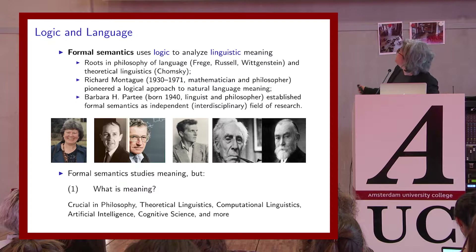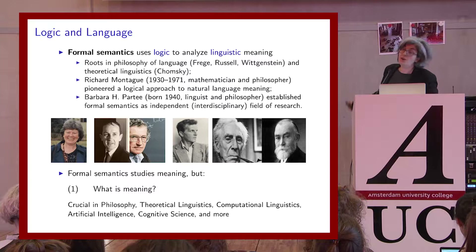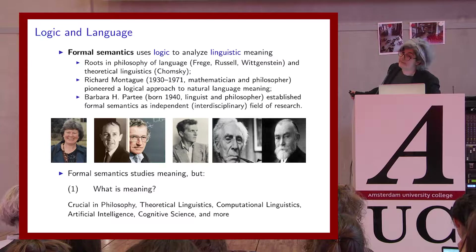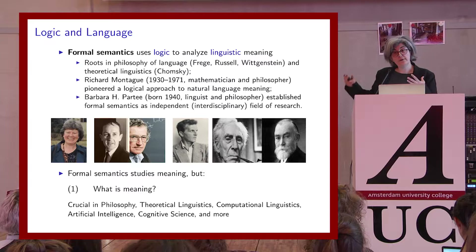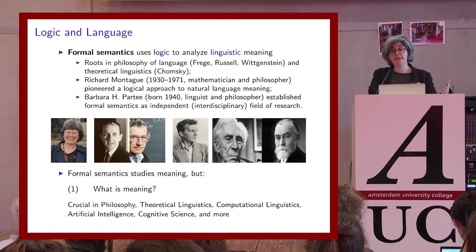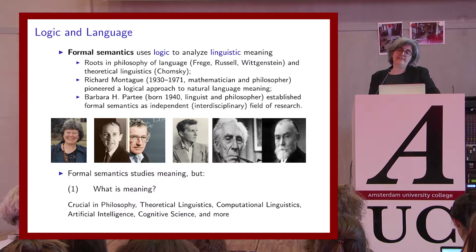There are two figures very important in the history of formal semantics. One is Richard Montague, who at the beginning of the 70s pioneered the use of logic to explain linguistic meanings. The second figure is Barbara Partee, who managed to put together these two traditions. She was a student of Chomsky at MIT, then went to UCLA and worked with Montague, bringing together theoretical linguistics, generative syntax, and logic and philosophy. She established formal semantics as an independent, flourishing, interdisciplinary field — and it is one of the few fields that has a founding mother, not a founding father.